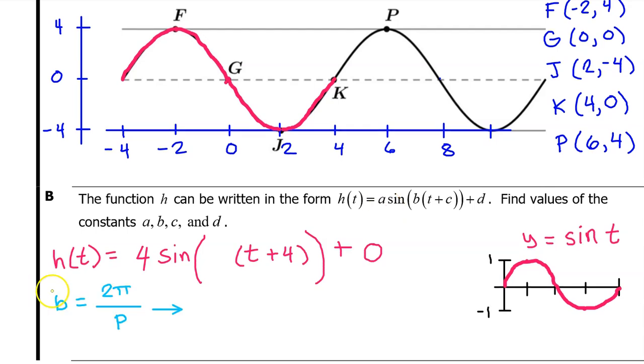I want you to memorize this little B value formula. B is equal to two pi divided by the period. We know that the period is eight, therefore B will equal two pi divided by eight, which reduces down to pi over four. And we can just fill that in right here.